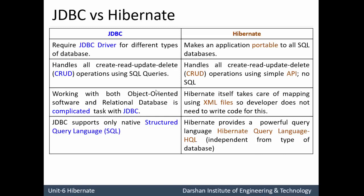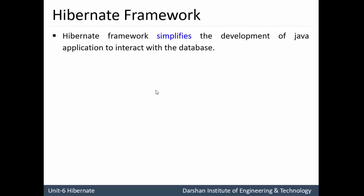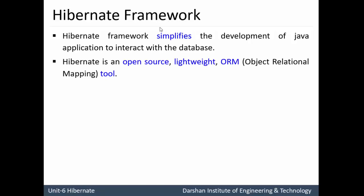With this we complete the differences between JDBC and Hibernate. Now, an overview of Hibernate: the Hibernate framework simplifies the development of Java applications that interact with databases. The word 'simplify' signifies that due to Hibernate's mapping, it becomes easier for a developer to design an application that communicates with the database. Second point: Hibernate is open source, lightweight, and an object relational mapping tool. The word 'lightweight' signifies that nothing needs to be installed on the client machine.